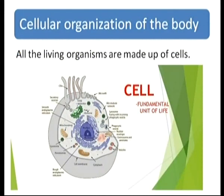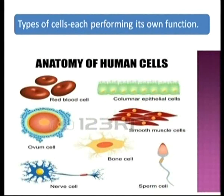The next important characteristic of living beings is cellular organization. All the processes — growth, reproduction, metabolism — occur inside the cell. Therefore, the cell is the fundamental unit of life. There are different types of cells in plants and animals, each performing its own function. For example, human cells include red blood cells, columnar epithelial cells, ovum, sperm, bone cells, and nerve cells.